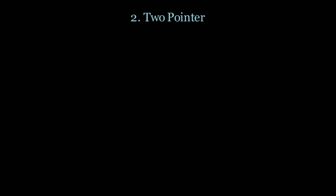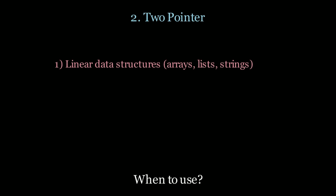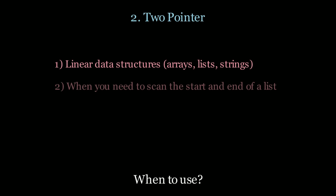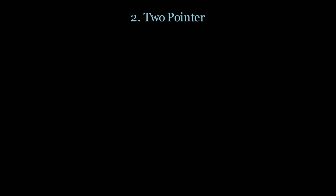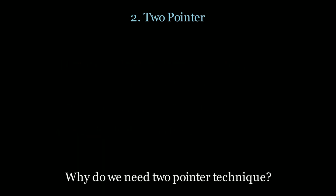Next up we have the two pointer pattern. When should you use this? For linear data structures such as before, when you need to scan the start and end of a list, if you have a sorted list and need to find pairs, and finally if you need to remove duplicates or filter through the list.